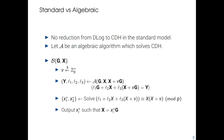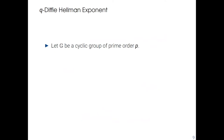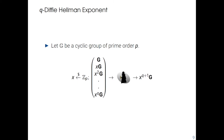We have proved that in the algebraic group model, new security reductions are enabled. It's a very promising model, and we would like to study many other computational assumptions in this model. For example, we would like to study the Q-Diffie-Hellman exponent assumption, where the adversary receives all X^i from i=0 to Q and should compute the next power X^(Q+1) in base G. This problem is a little more complex than CDH, but AGM seems powerful, so it could be interesting to see if DLOG is equivalent to QDHE in this model.